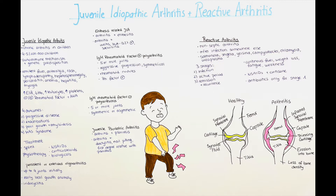In the children that present with symptoms before the age of 5, boys and girls are equally affected. But over the age of 5, it occurs more often in girls. Some of the clinical features include high remittent fever, joint pain, a salmon pink or red rash, lymphadenopathy, hepatosplenomegaly, serositis, pericarditis, anemia, hepatitis, and myalgia, so muscle pain.